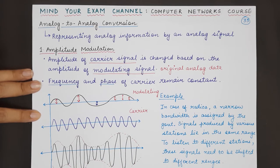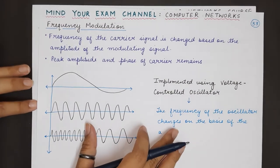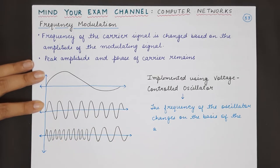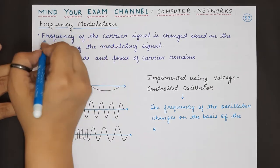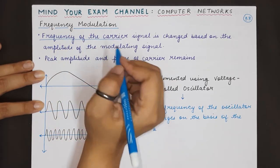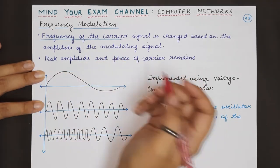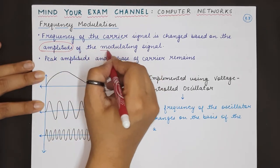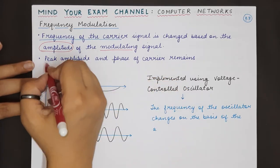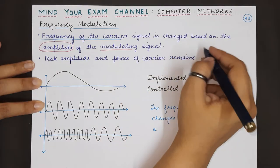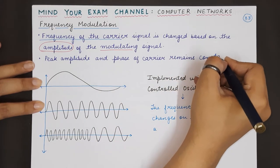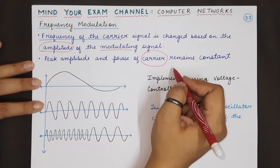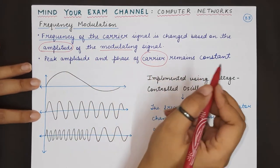After amplitude modulation, let's come to frequency modulation — the second kind of analog to analog conversion technique. In frequency modulation, the frequency of the carrier signal is getting changed, and it is getting changed on the basis of the amplitude of the original modulating signal. The peak amplitude and phase of the carrier signal remain constant. So in frequency modulation, only the frequency of the carrier signal is getting changed; amplitude and phase remain constant.